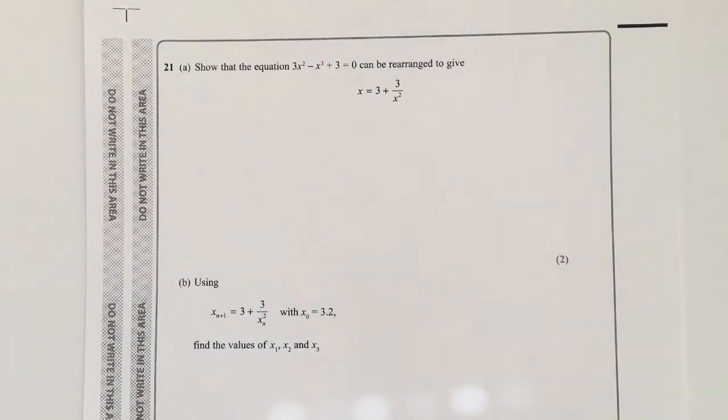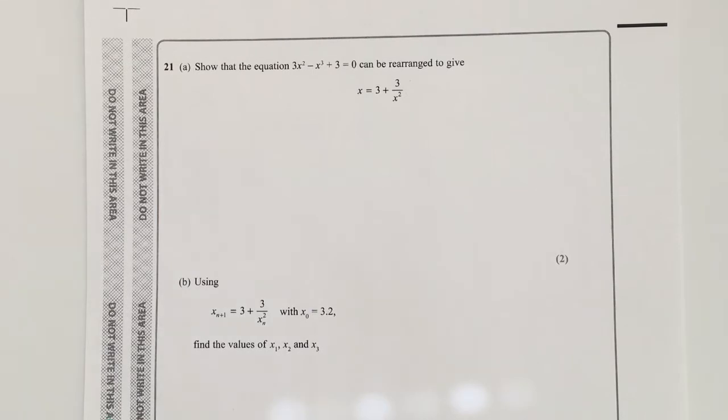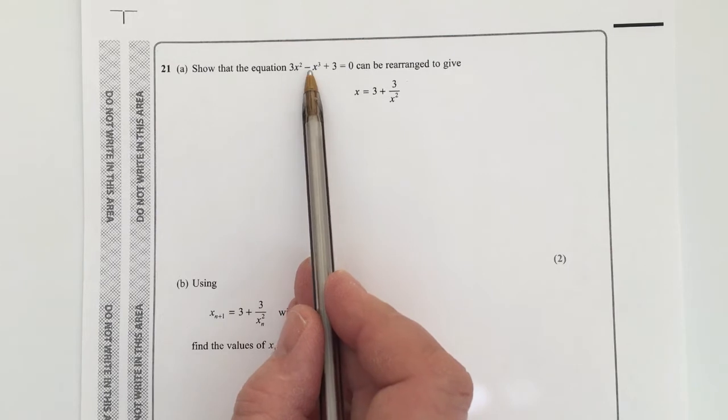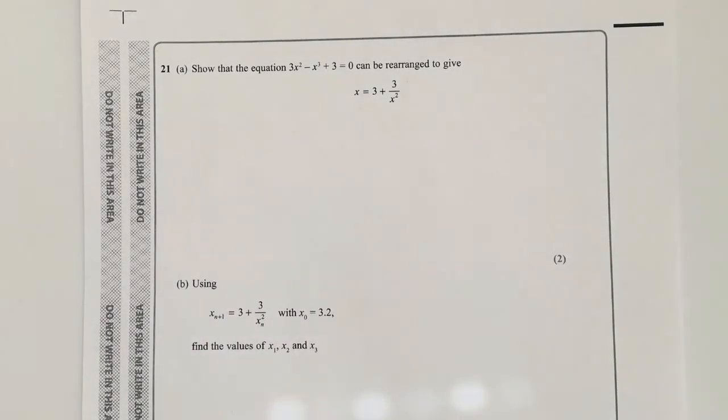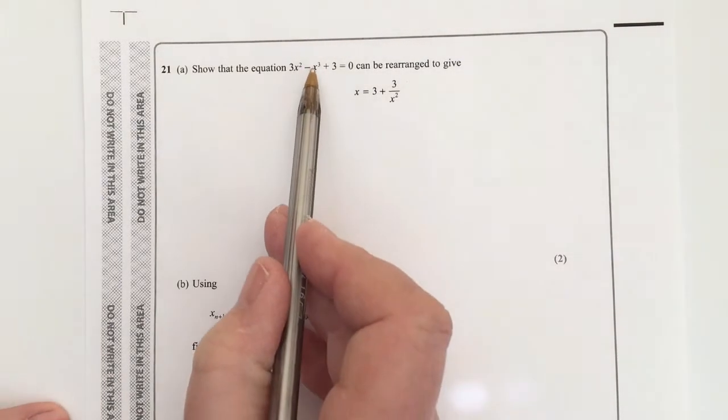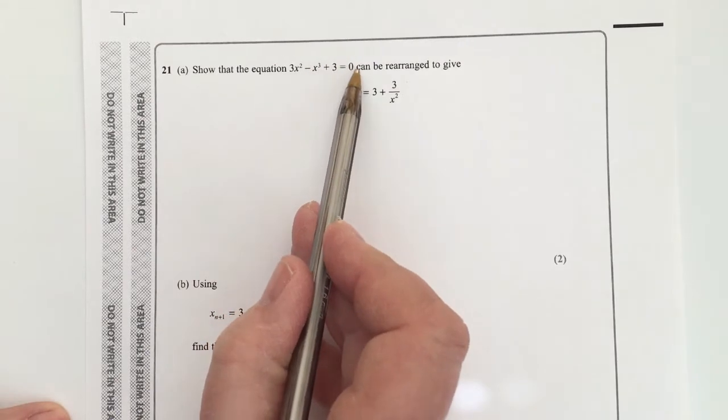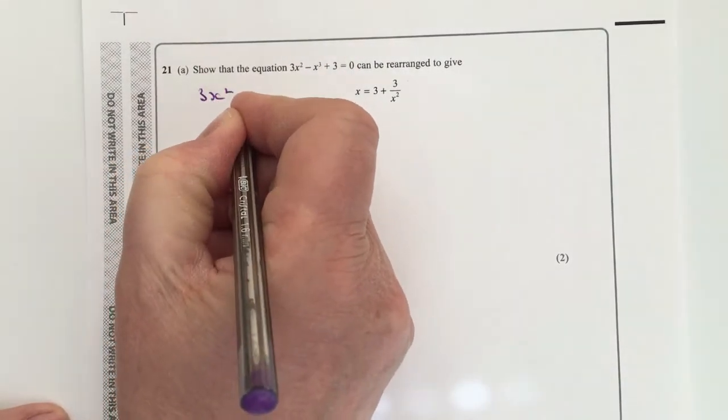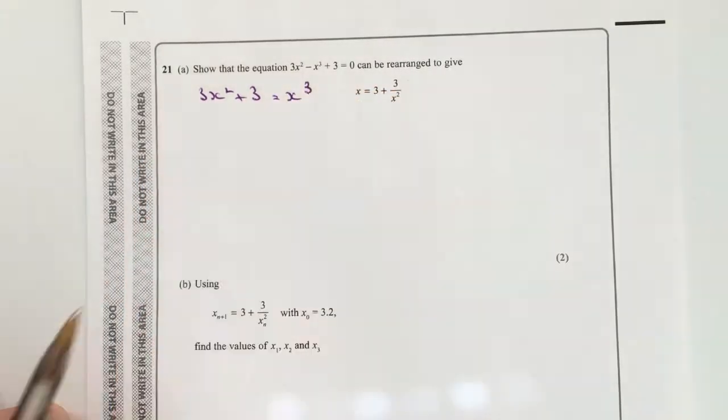So the way we're going to do that is I'm going to just manipulate this a little bit. So I've got at the moment 3x squared minus x cubed plus 3. So I'm going to take that x cubed and I'm going to put it towards the right-hand side, so I can write that as 3x squared plus 3 equals x cubed.